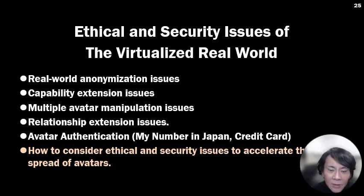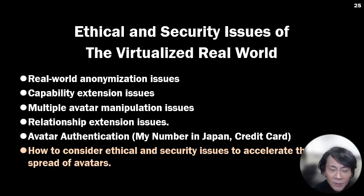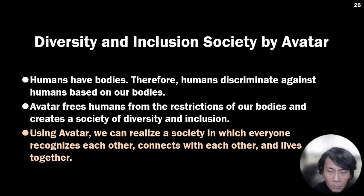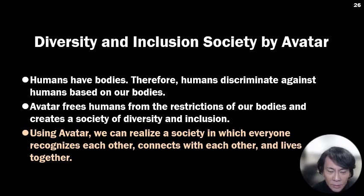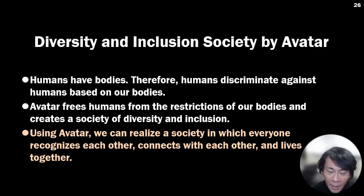To do that, we need to carefully discuss ethical escalation and security issues, and we are now tackling these issues. But the most important thing is diversity and inclusion by using avatars. The human has a body, and therefore humans discriminate against each other based on our bodies. Avatar frees humans from the restriction of our bodies and creates a society of diversity and inclusion — a society in which everyone recognizes each other, connects with each other, and lives together. Thank you for your attention.